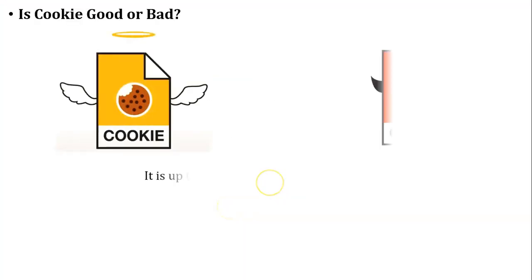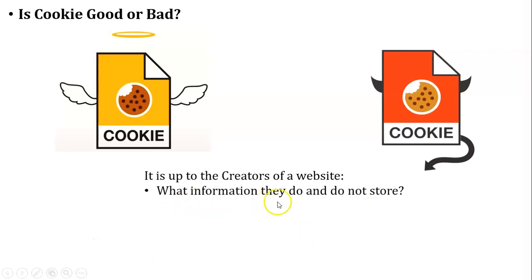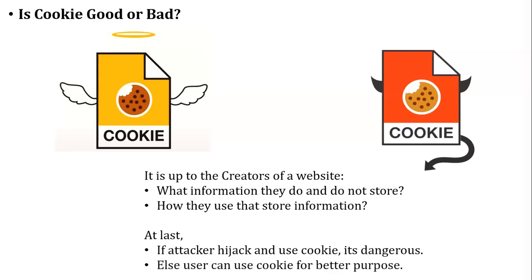Is a cookie good or bad? Whether a cookie is good or bad depends on the creators of that website. Consider a non-technical example: a hammer and an axe can both be used to make furniture or to destroy furniture. Similarly, two questions determine whether a cookie is good or bad: what information the creators store inside the cookie, and how they use that stored information. Some personal information like user ID and password is stored in cookies — if an attacker hijacks and uses the cookie, it is very dangerous. Otherwise, cookies serve useful purposes. So we cannot simply say a cookie is good or bad.